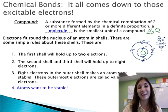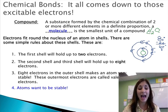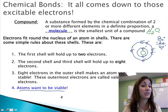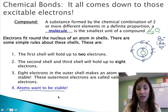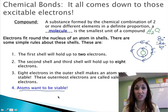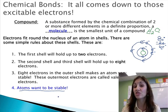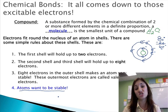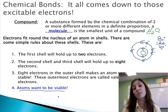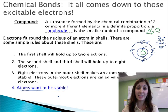All important concept here: atoms want to be stable. And they're willing to do anything to become stable. They're willing to steal electrons. They're willing to give up their electrons. And they're even willing to share electrons. So the question now becomes, how do we predict what is going to happen?